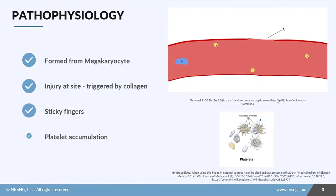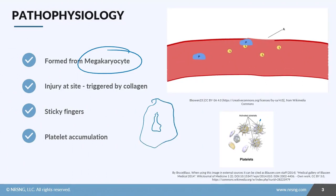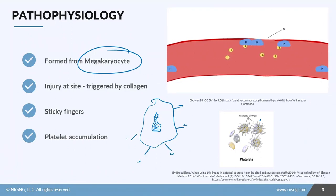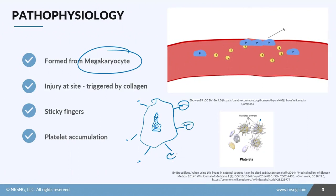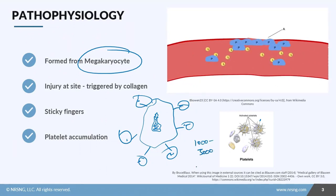Let's look at how platelets work. Platelets are formed from cells called megakaryocytes. This is your megakaryocyte — it has a nucleus — and they have little appendages that break off as little platelets. These are your platelets right here.